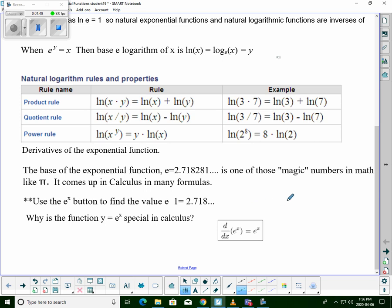So the base of the exponential function e is equal to 2.718281. It's just one of those magic numbers in math, like pi. It comes up in calculus and all kinds of formulas. If you want to just type in e to the x in your calculator, you can see the numbers.